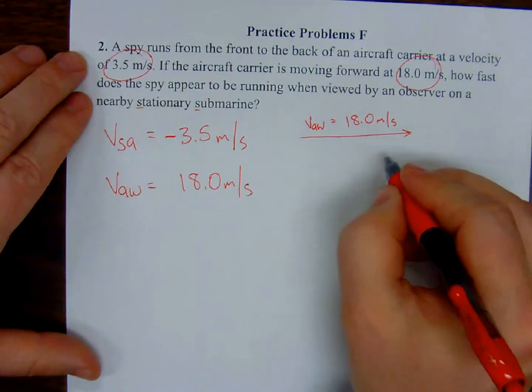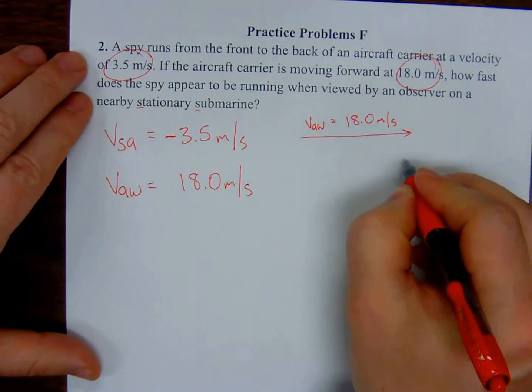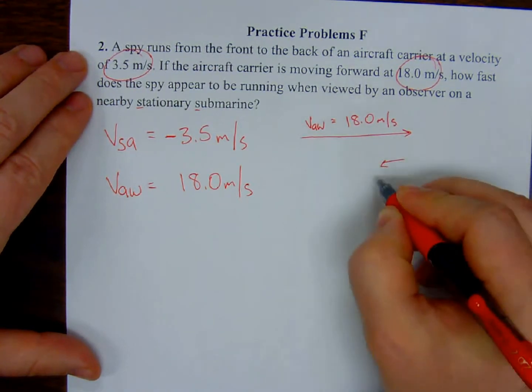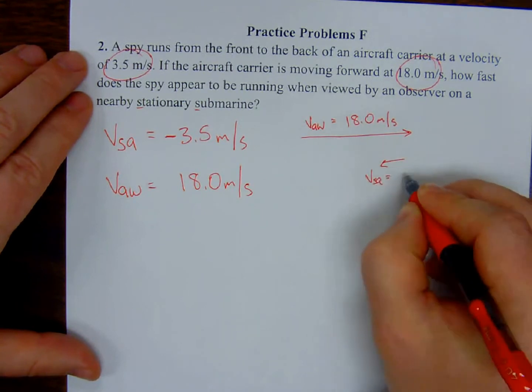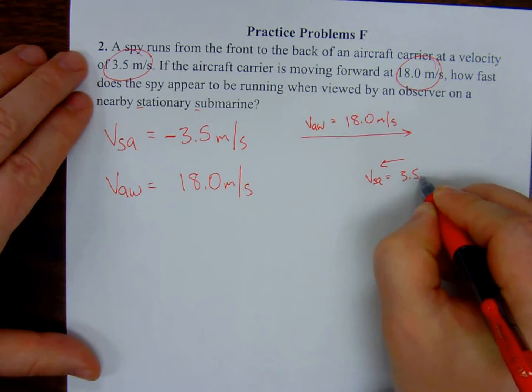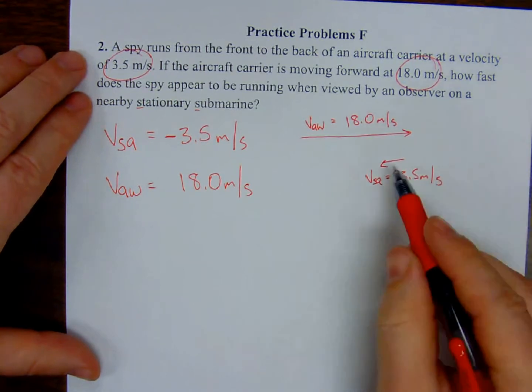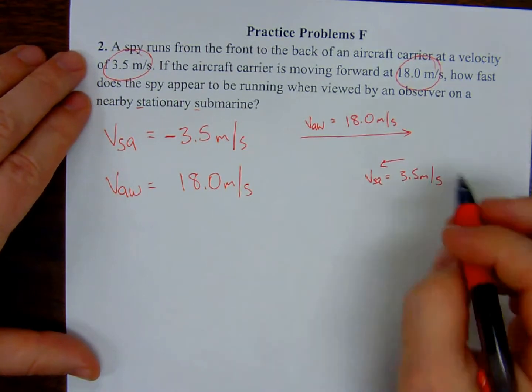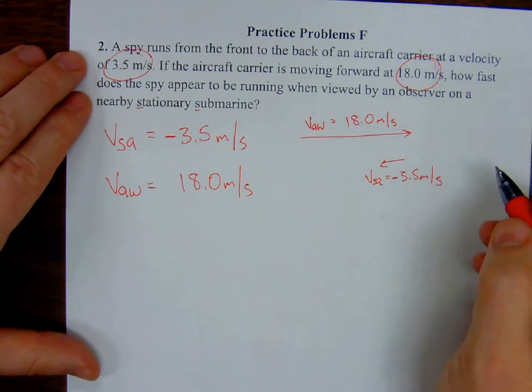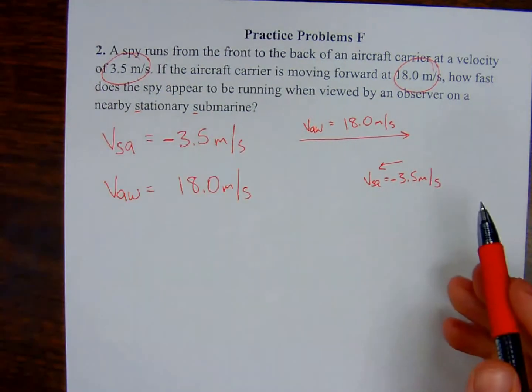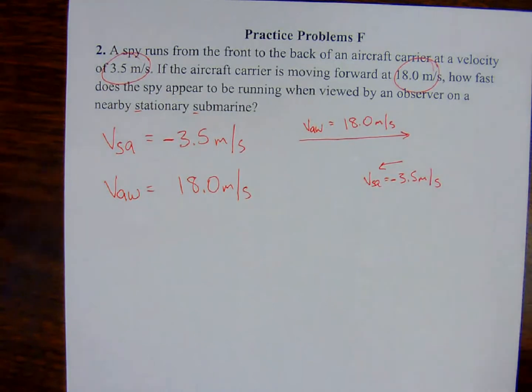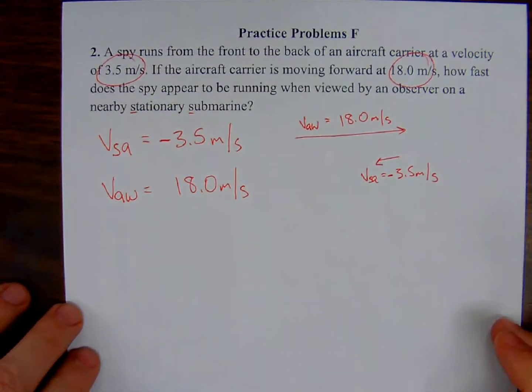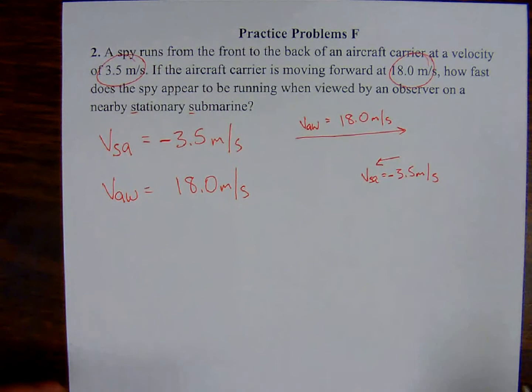But it's in the opposite direction. So I need to represent that. And so the reason that it's usually a good idea to make the smaller value the negative vector, because even though the spy is trying to run this direction, because the aircraft carrier is faster than the spy, the spy is still overall moving in this direction.